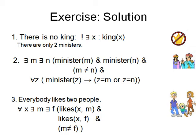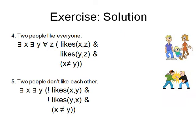Okay, the solutions are obvious. There is no king. You say it's not the case there exists x and king(x). And there are two ministers. How do you say it? A minister m and n, and m is not equal to n, and for every z, z is a minister, either z is m or z is n.